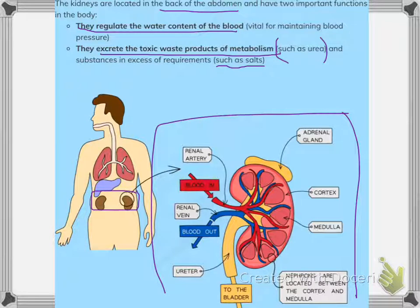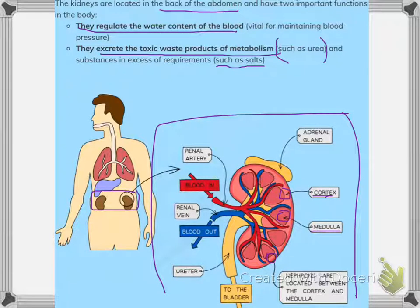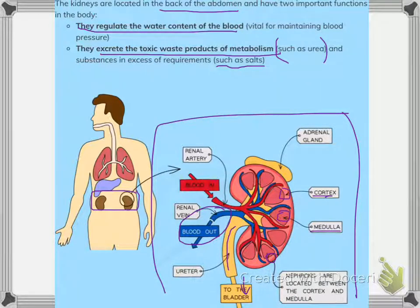This is the cortex and the medulla. Here is where the nephrons are located — nephrons are located between the cortex and the medulla. This is the ureter, which goes to the bladder, the place where urine is stored. This is the renal vein, which takes blood out of the kidney.